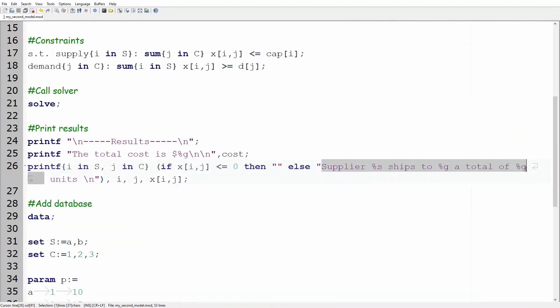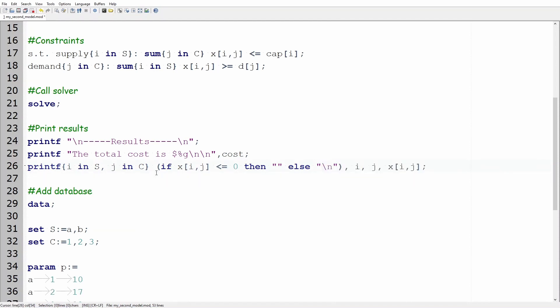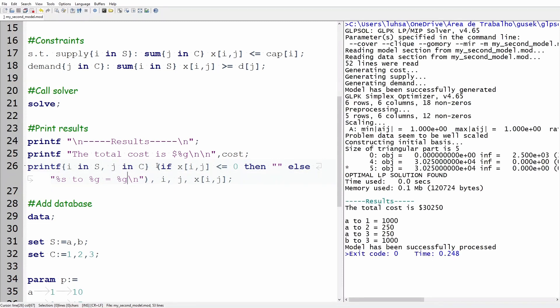Inside the quotation marks after the else statement write %s to %g equals %g. Run the code again and you get a cleaner way to display the results.